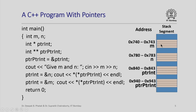In the stack segment, four consecutive locations are reserved for the variable m, and similarly four locations are allocated for n. All addresses are written in hexadecimal. The variable pointerint stores an address, and assuming all addresses are 32 bits, it also needs four bytes. Likewise, pointer-pointer-int is a pointer and also needs four bytes in the stack segment, with its own range of addresses.